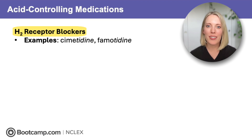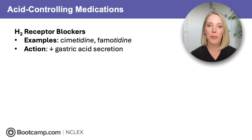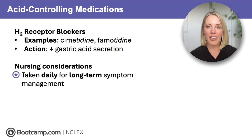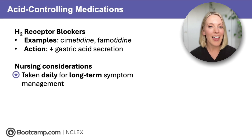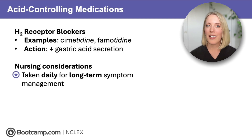Next up are H2 receptor blockers — we recognize these because they all end in 'tidine': cimetidine and famotidine. These medications also decrease gastric acid by blocking the H2 receptors in the stomach, which decreases gastric acid secretion. Just like PPIs, these are taken daily for long-term symptom management of GERD and peptic ulcer disease, and are most effective when taken in the morning or before eating. Mnemonic: cimetidine and famotidine both end in 'dine' — take H2 blockers before you dine, and don't recline after meals if you want to feel fine.